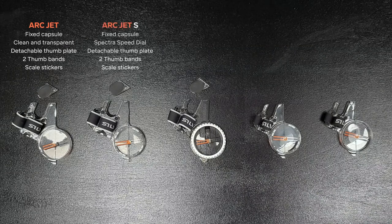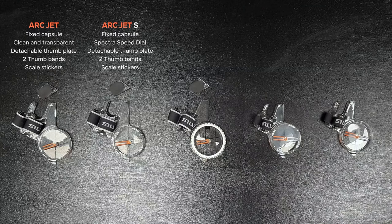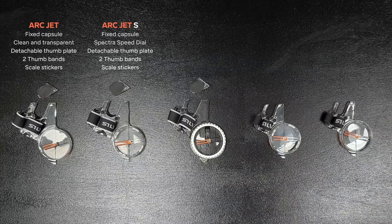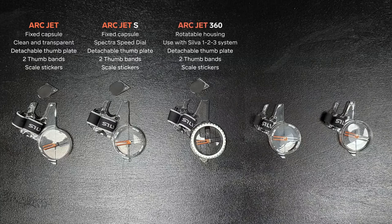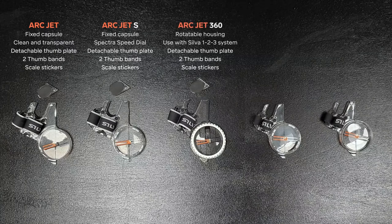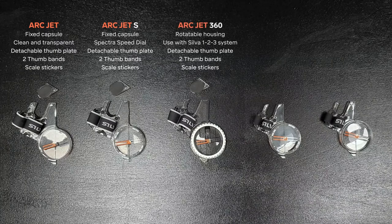The Arcjet S is your compass if you prefer to navigate with the Spectra speed dial graphics on the capsule. The Arcjet 360 has a rotatable housing that lets you use the Silva 1-2-3 system for easy navigation.